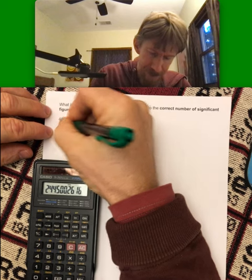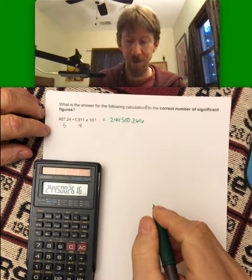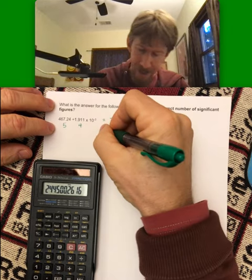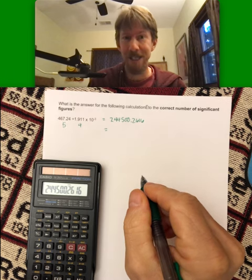So we have five sig figs here and four sig figs there. Our answer should have four sig figs. And with these trailing zeros, we're going to have to put it in scientific notation.